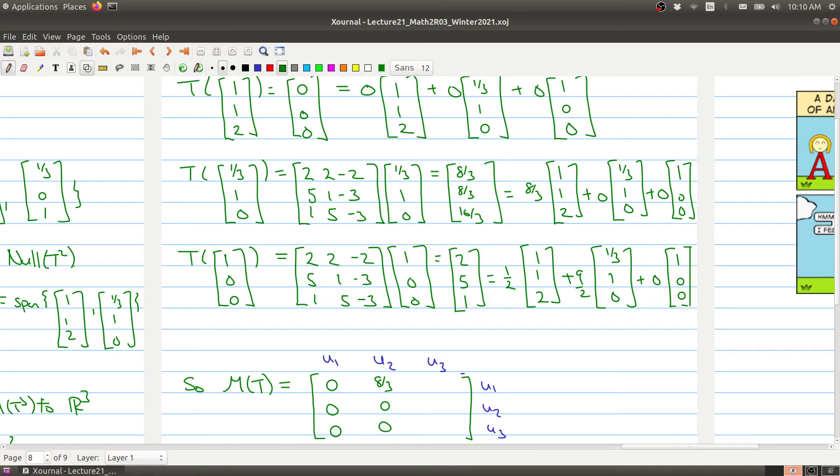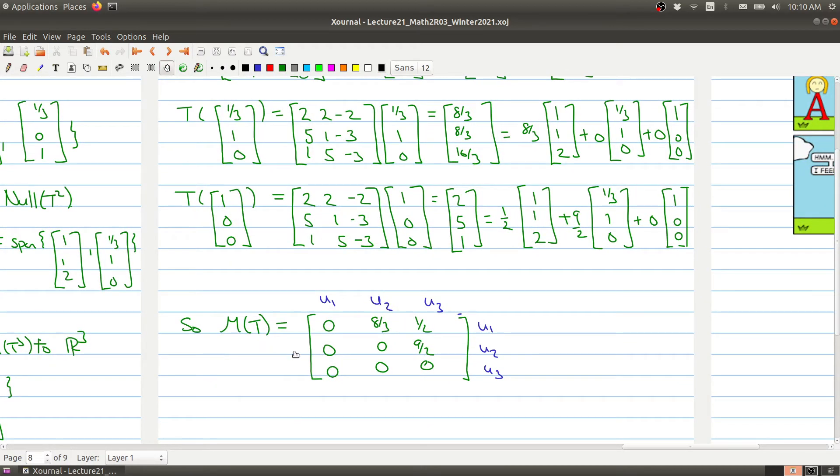And then 1, 0, 0 gets sent to 1 half times the first vector, plus 9 halves times the second vector, plus 0 times the last vector. And there we go. So we've written our matrix T with respect to this basis, gives us an upper triangular matrix with all zeros on the diagonal.